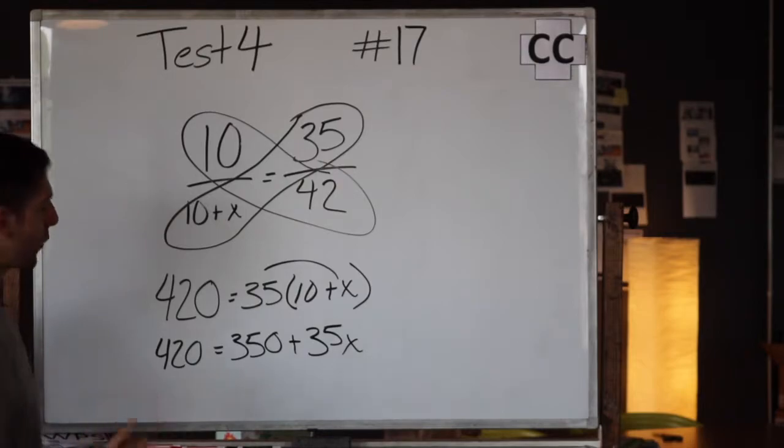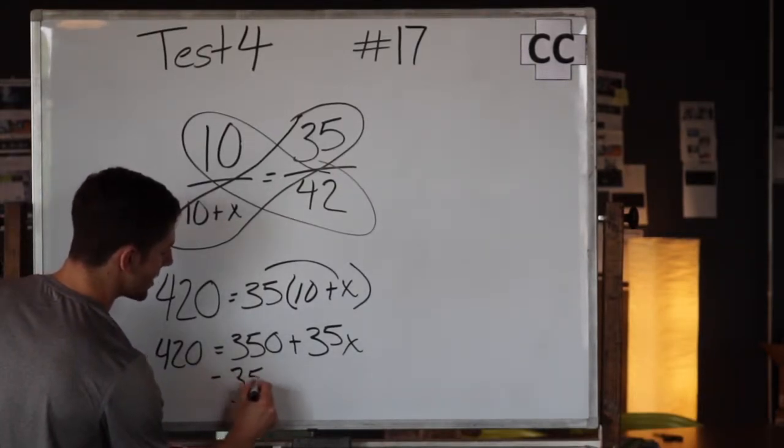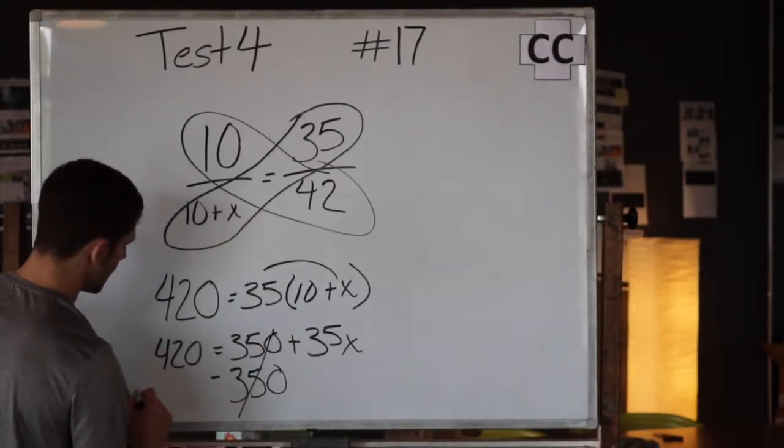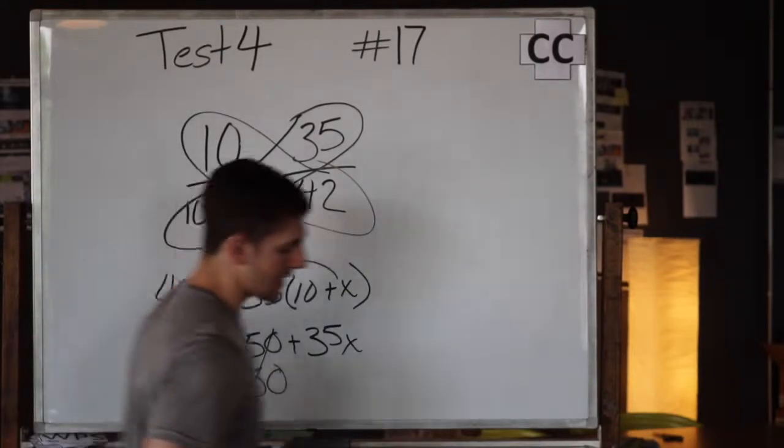So now we need to solve for x. How we do this is we're going to subtract 350 from this side so that this cancels out. Subtract 350 from the other side, so we're taking it from both sides.